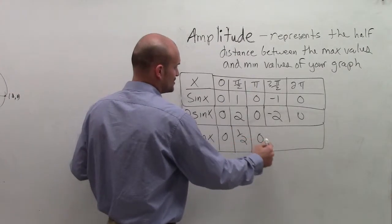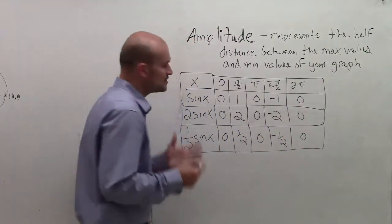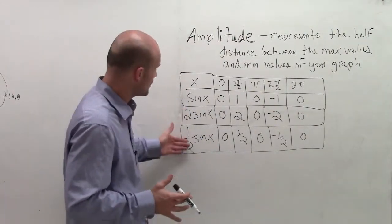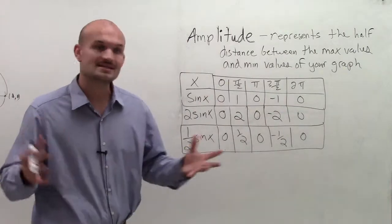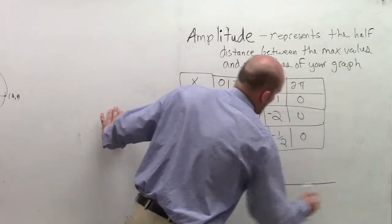And then over here, I'd have still 0, negative one half, and 0. So you can see by multiplying by a number, it's going to affect our graph.